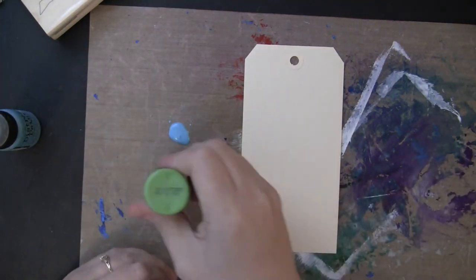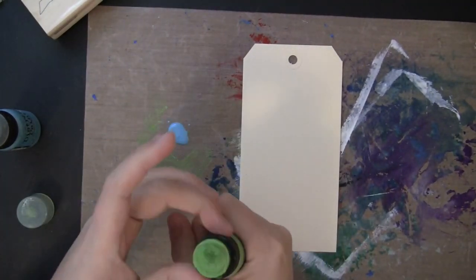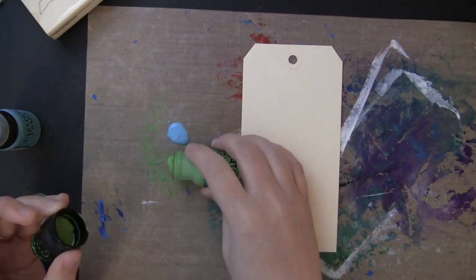I'm using lots of Distress Paints on my craft sheet. So the first one I put down is Broken China, and I'm also using Mowed Lawn.